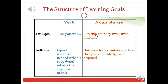When formulating learning goals, it is very important to be aware of their structure. Learning goals consist of two main components: a verb and a noun phrase. The verb is very important because it indicates the action that must be taken — in other words, it shows the cognitive skill required to complete the task, regardless of the content. For instance, in the example provided, the cognitive skill is using patterns. This cognitive skill is fairly general and, once mastered, can be applied or transferred to a variety of objects and subject areas.